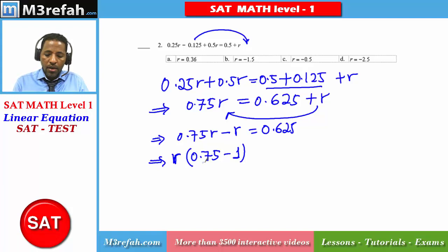Because when you multiply r by this one it will give you 0.75r. When you multiply r by negative 1 it will give you negative r equal to 0.625.